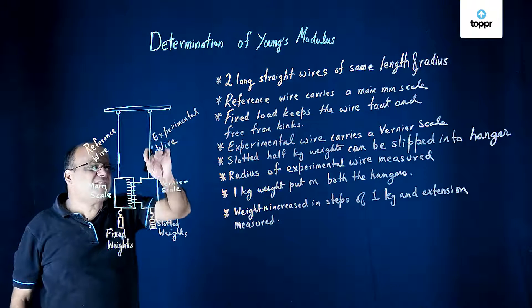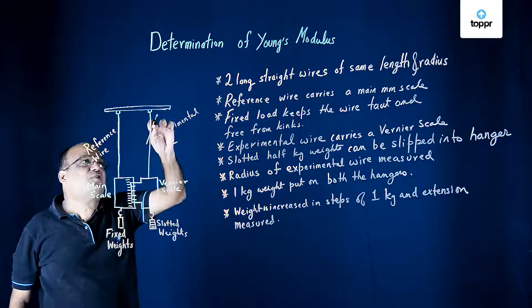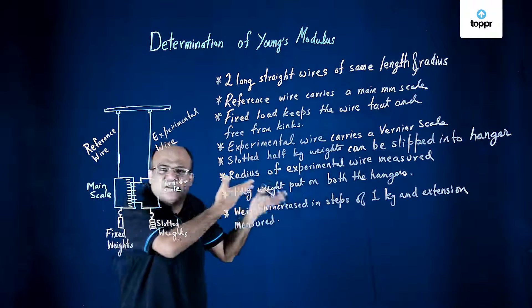We also measure the radius of the experimental wire at 3-4 places so we get an idea of the radius of that wire.